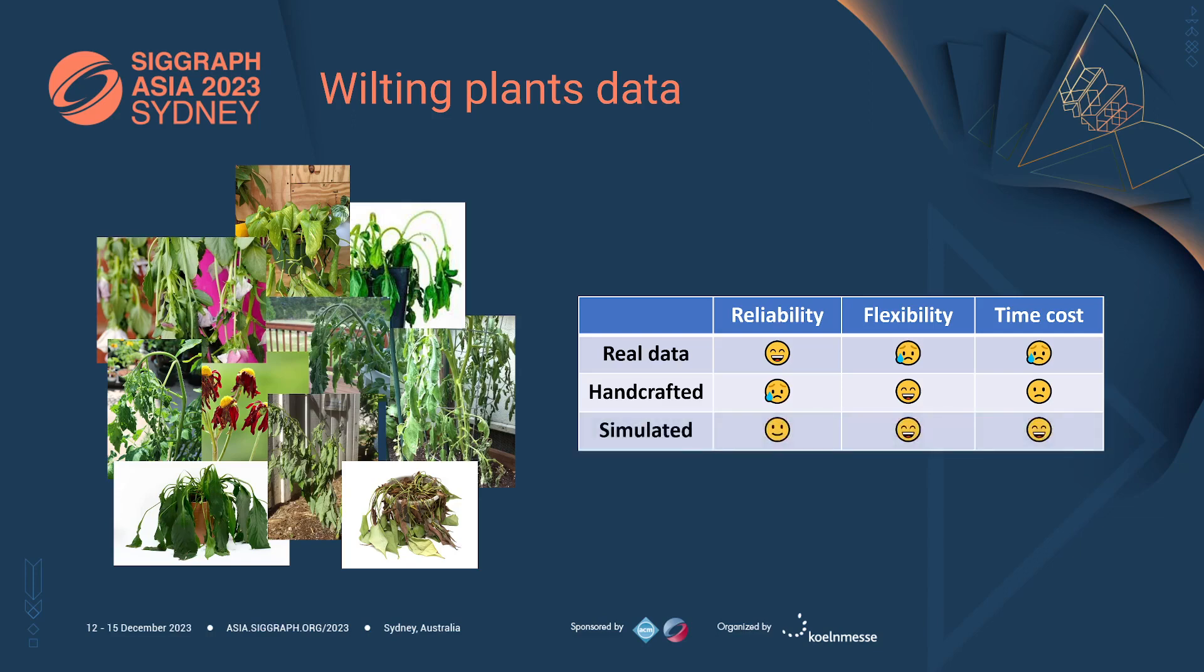Instead, we propose to encapsulate the biology of the wilting process in an efficient simulation framework that can be exploited for mass production of synthetic data. Being based on the actual physics of plants, our approach produces far more realistic and reliable data, while still preserving the flexibility and extensibility proper of in silico processes. Furthermore, the complete automation enables massive production of data in a fraction of the time required by the other methods.